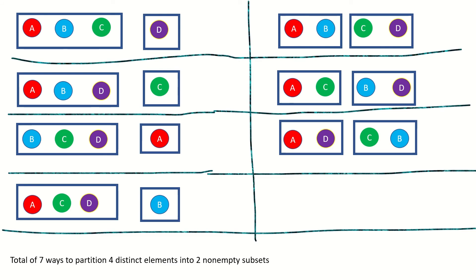When we found there were seven ways to partition four distinct elements into two non-empty subsets, we found the value of the Stirling partition number S, where four is the size of our set and two is the number of non-empty subsets. However, notice that there were two unique ways we grouped the elements: three elements together and one on its own, and two together and two together. This is because there are two different ways to write four as a sum of two positive integers: 3+1 and 2+2. So while S gives us the big picture, it leaves out important details — the different configurations of subsets, each corresponding to a specific integer partition of n.